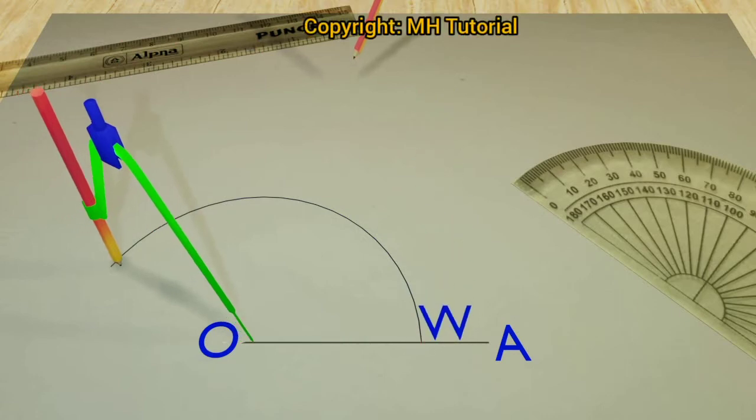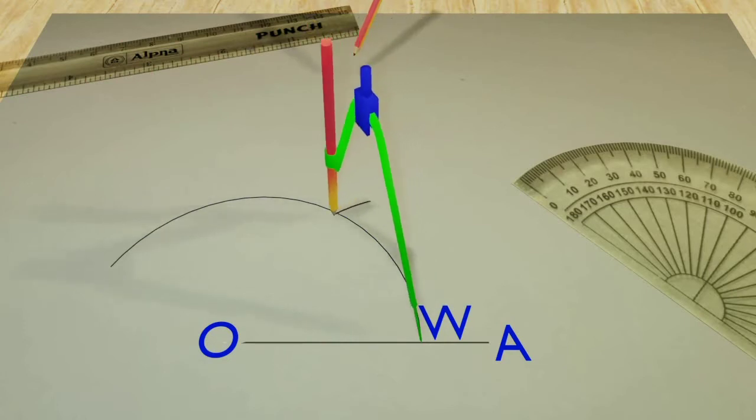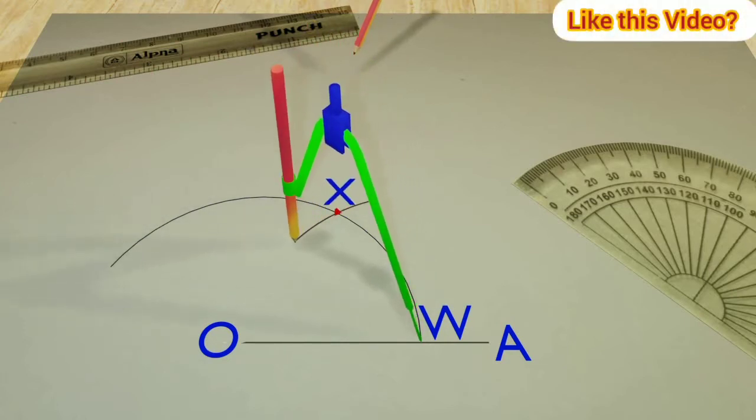Then another circle segment of the same radius is drawn by placing the tip at point W. The circle arc meets the first one at point X.